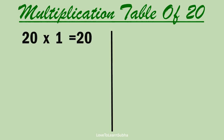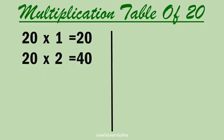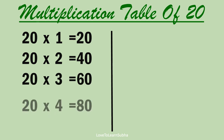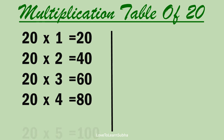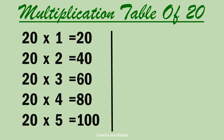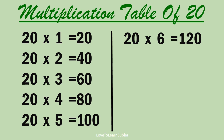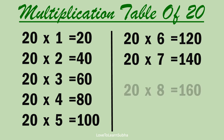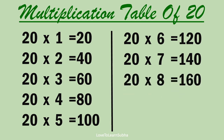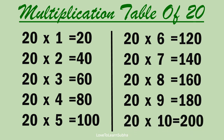Multiplication table of 20. 20 1s are 20, 20 2s are 40, 20 3s are 60, 20 6s are 120, 20 7s are 140, 20 8s are 160, 20 9s are 180, 20 10s are 200.